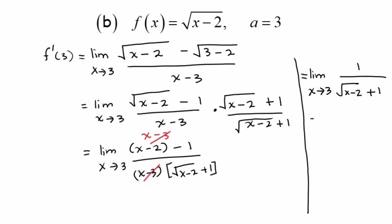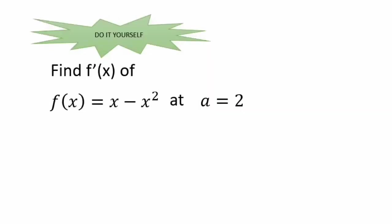I am going to substitute x with 3, so we have 1 over √(3 minus 2) plus 1, and the answer will be 1 over 2. For the remaining question, please try to do it yourself as proof that you watched this video. Thank you.